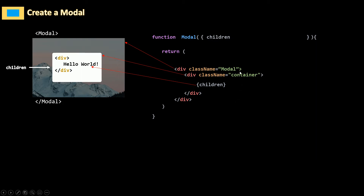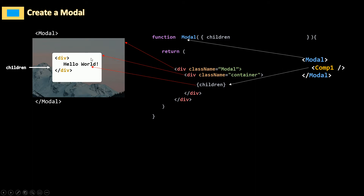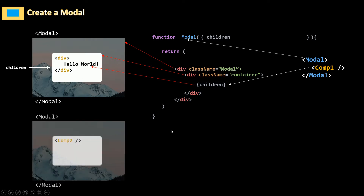To use our modal, I'm just going to call the modal function and put whatever I want to show inside the container. Now to show and hide our modal we're going to use some state.